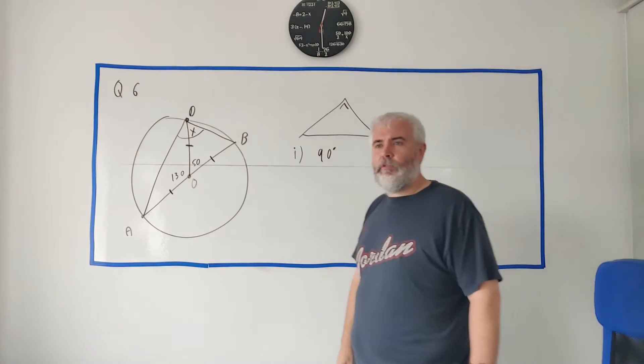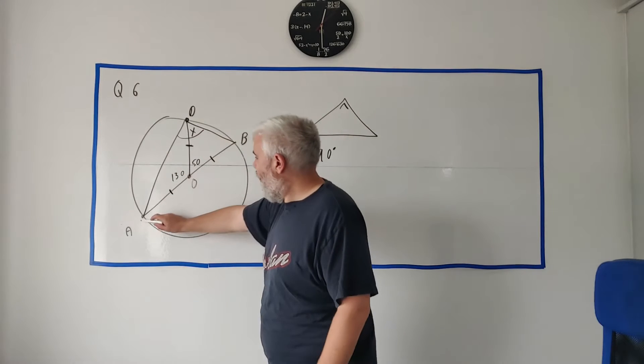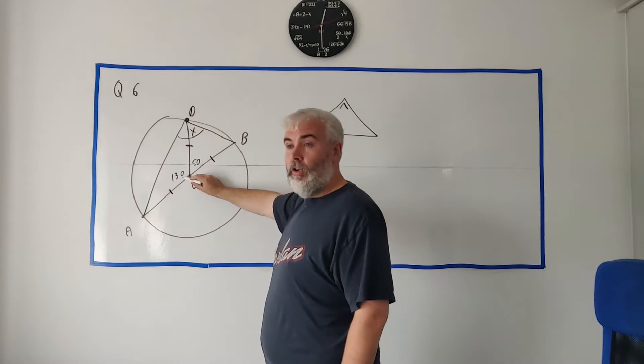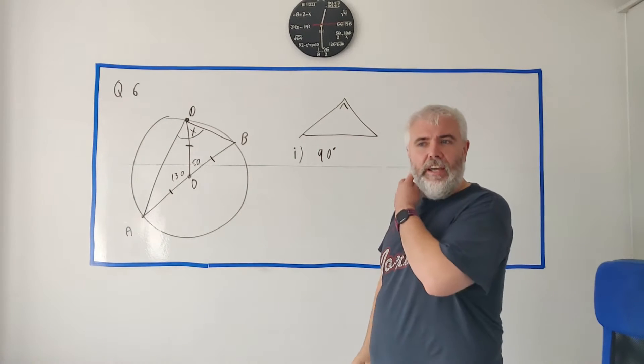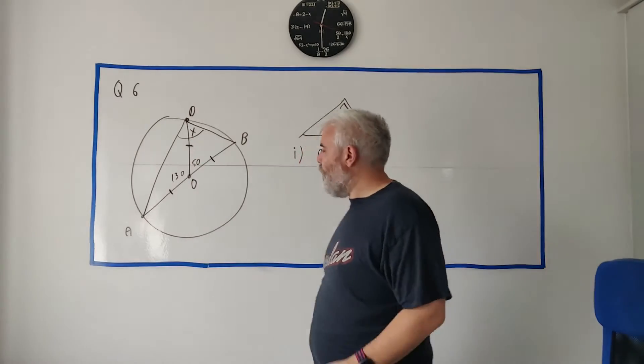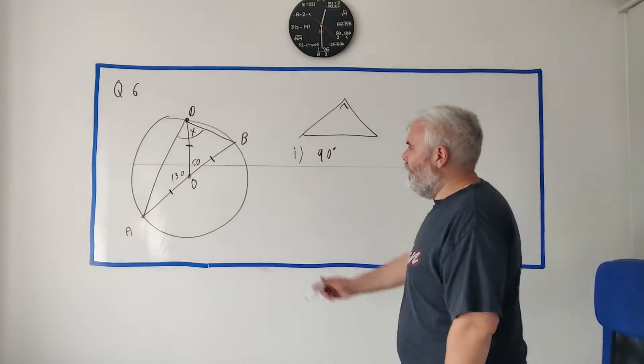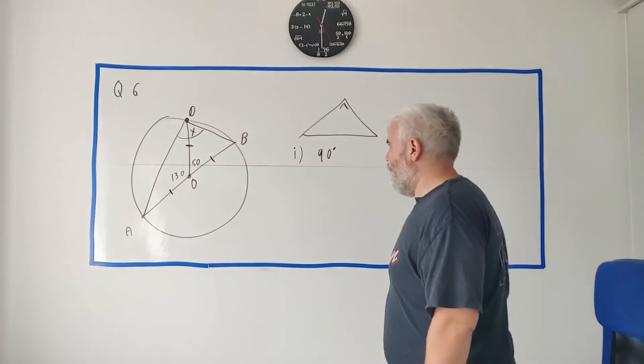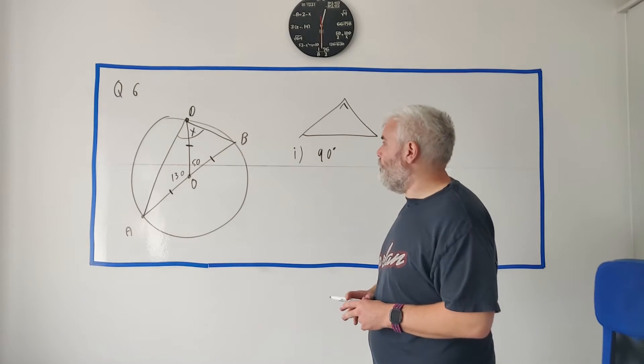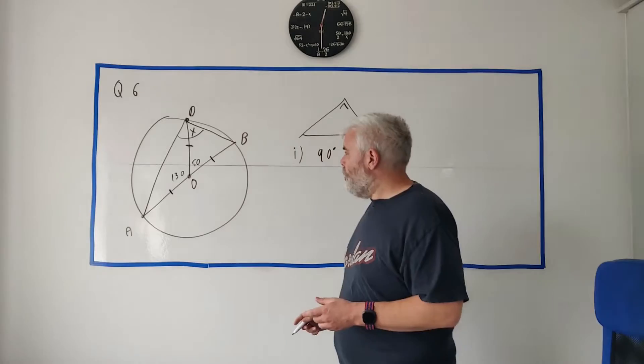Okay, so part 2. Work out the size of the angle marked x. So how would you do this? There's a couple of ways to go ahead doing it. The fact that I put 50 in would help already. And the big clue here is to find an isosceles triangle, and we can do that because of all these radii.